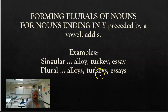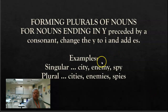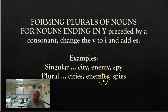Notice there's O-Y, E-Y, A-Y — a vowel and then the Y. Now, if it ends in a Y but it is preceded by a consonant, then you change the Y to I, then add ES. Singular: city — notice the Y is changed to I — cities. Enemy: IES, enemies. Spy: spies.